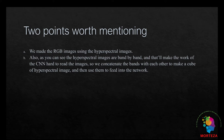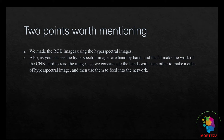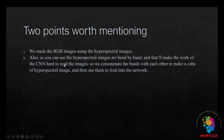Before we go further, there are two points worth mentioning. First, we made the RGB images ourselves using the hyperspectral images and the standard formula for turning a reflectance spectrum into an sRGB image. Second, the hyperspectral images are stored band by band, each band having its own image. That makes it hard for the CNN to read. So we have to concatenate the bands together to make a cube of hyperspectral image, and then feed that cube into the network.